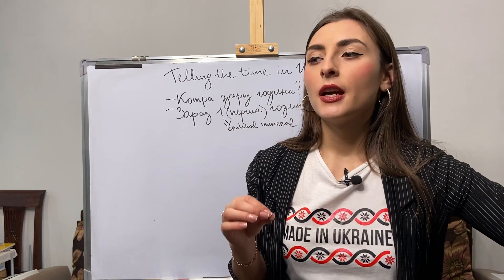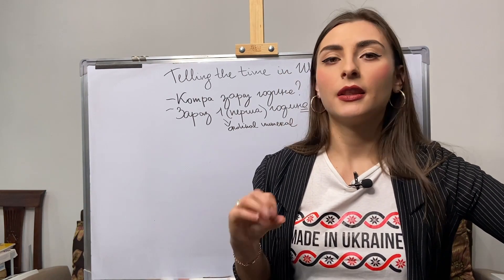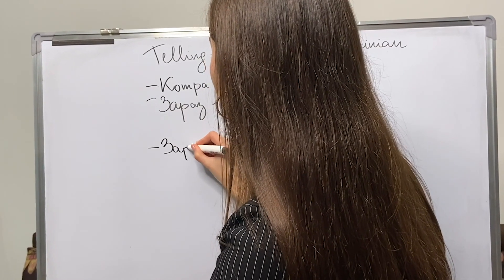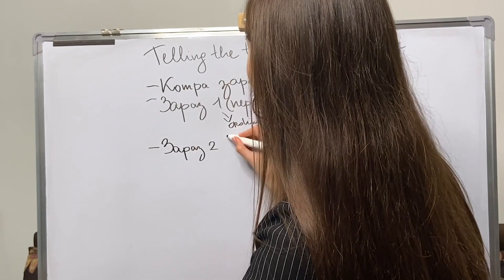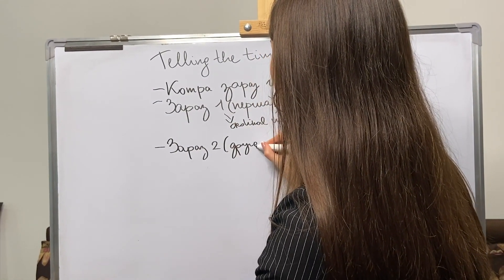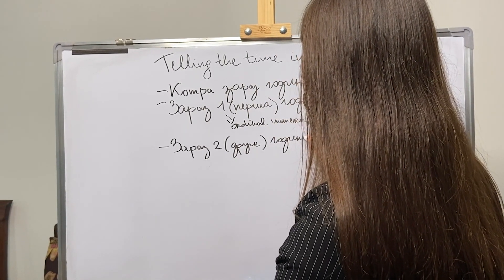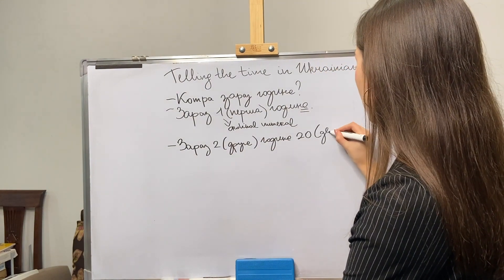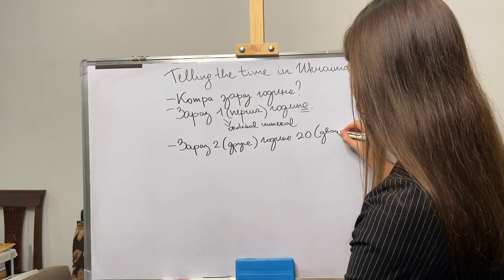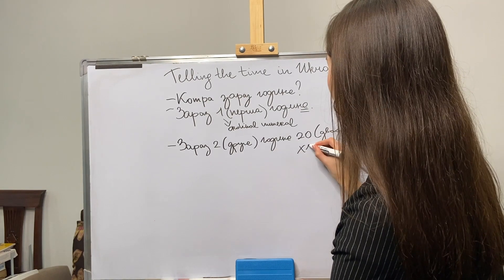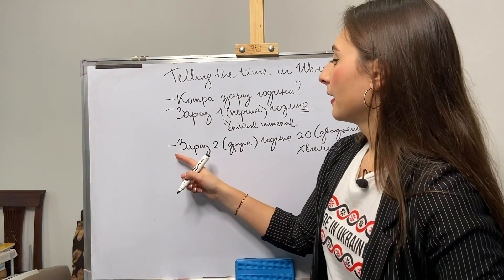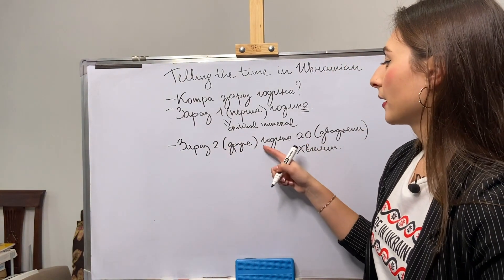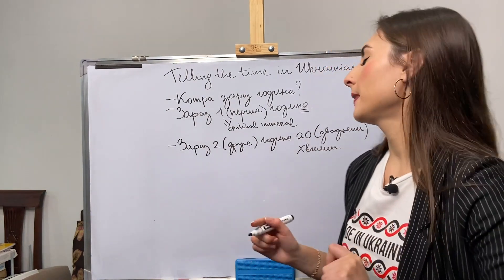What if I want to say the minutes? Let me write you an example. «Зараз друга година двадцять хвилин» — right now it's 2:20. So «друга година» — the hour — and then «двадцять хвилин» — 20 minutes. «Двадцять» means 20 literally, meaning 20 minutes.